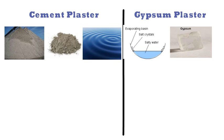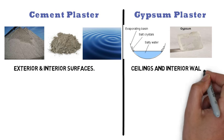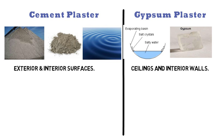Cement plaster can be used on exterior and interior surfaces. Whereas gypsum plaster can only be used on ceilings and interior walls. It cannot be used in wet areas like toilet, bath, kitchen, wash area, balconies, etc.